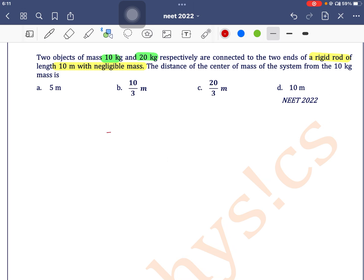So it is given that we have a rod here whose length is equal to 10 meters, and at the two ends of this rod we have connected two masses: one is 10 kg, another is 20 kg.